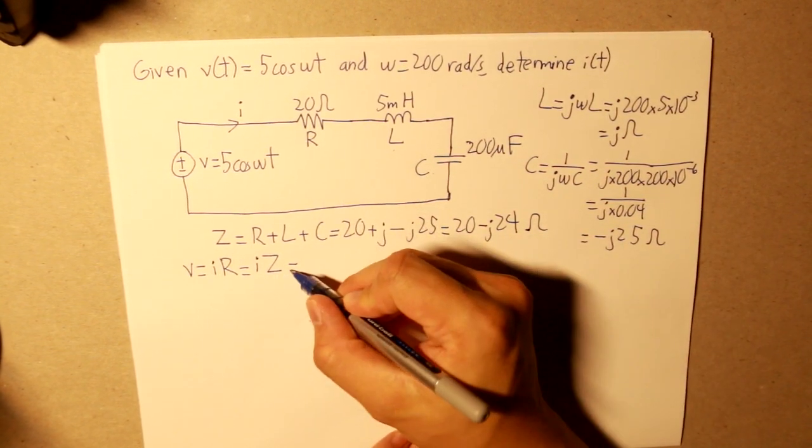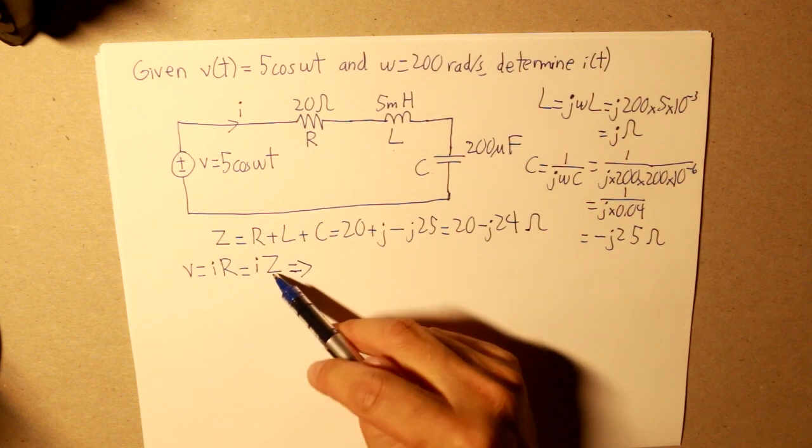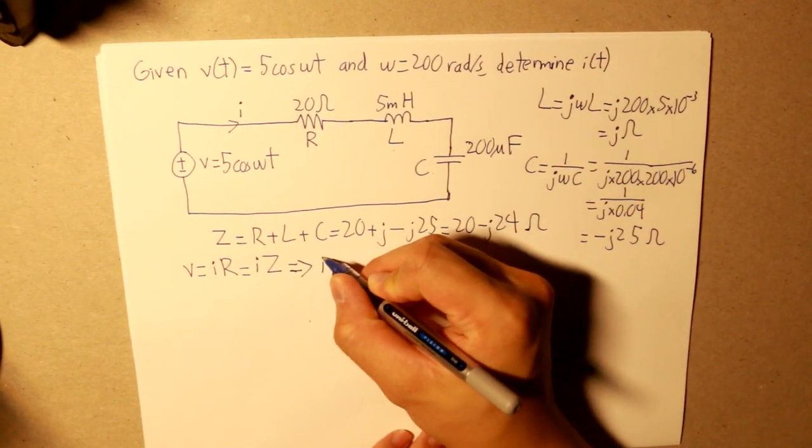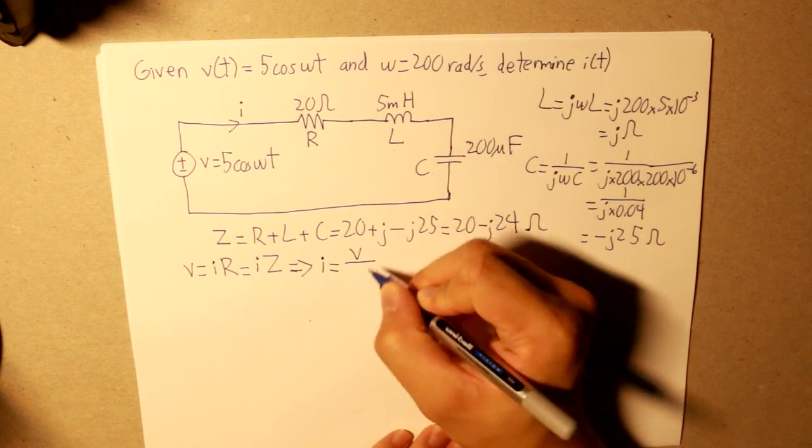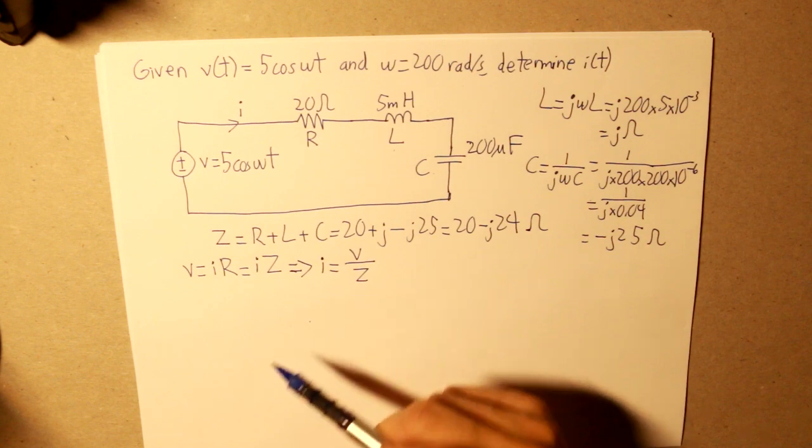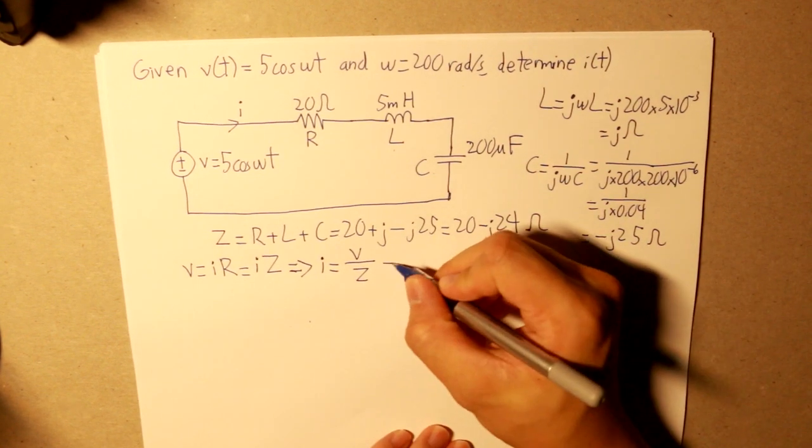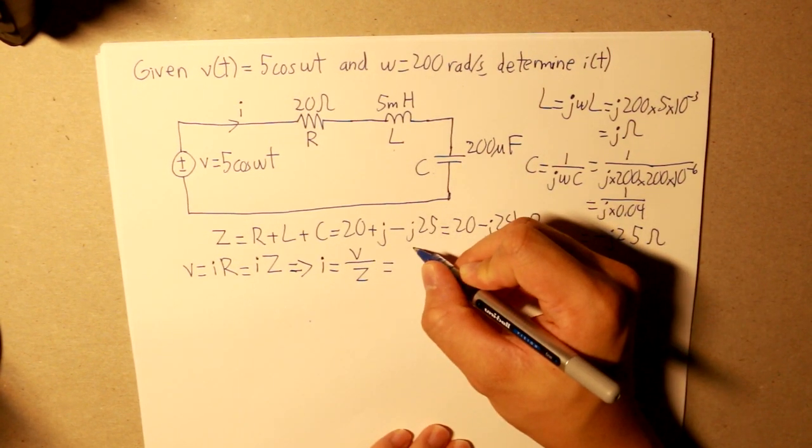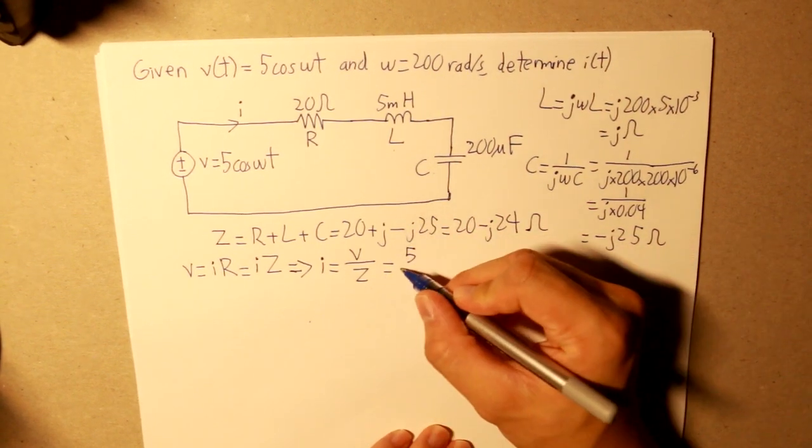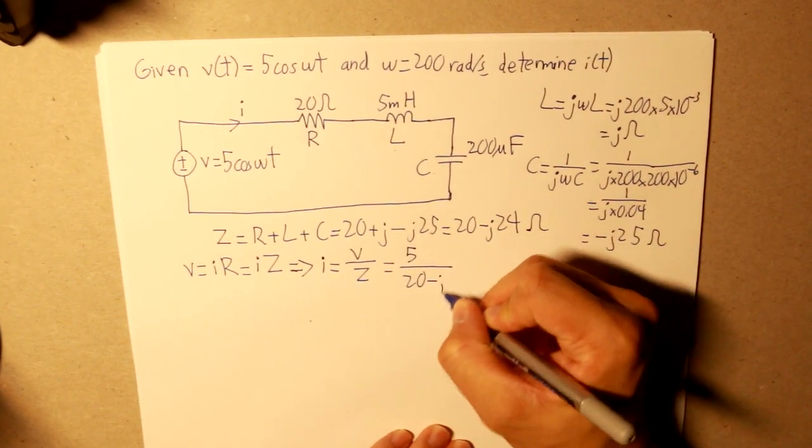So our current, that's what we're trying to find. We take the impedance and we move it to the other side, and what we get is the current is equal to the voltage divided by the impedance. Now, going and moving on to our voltage, what we do know is that our voltage is 5. And our impedance is this, 20 minus j24.